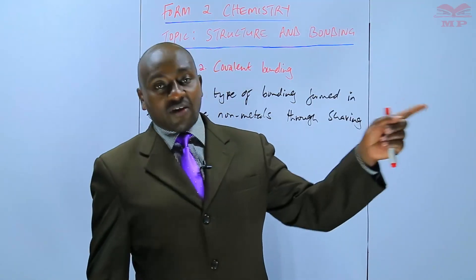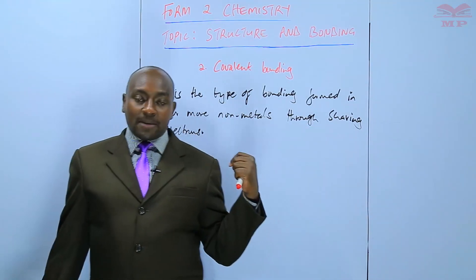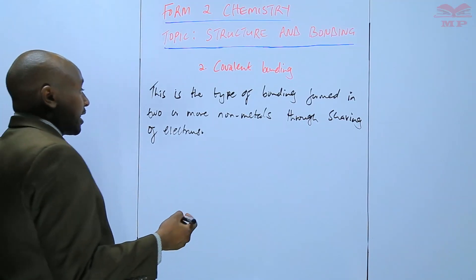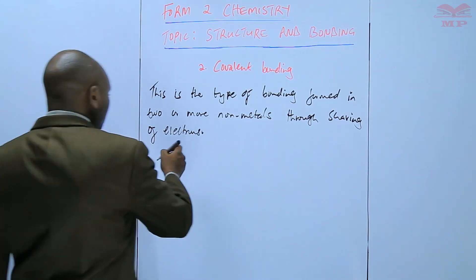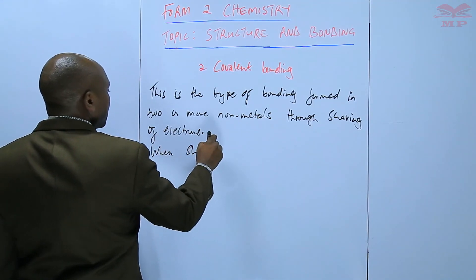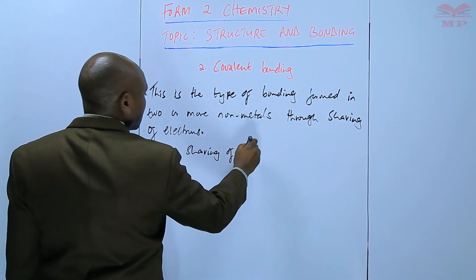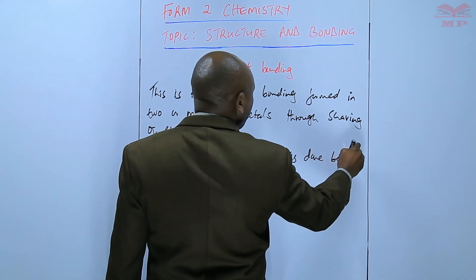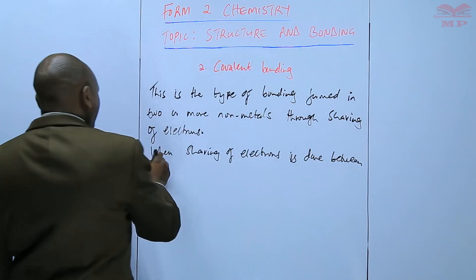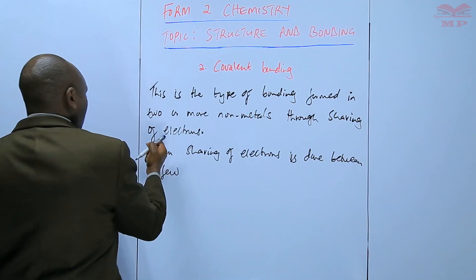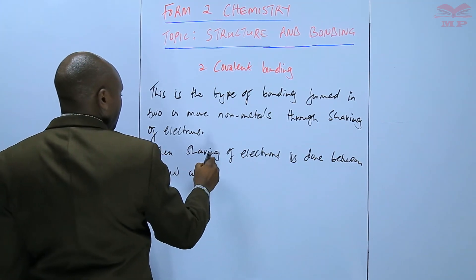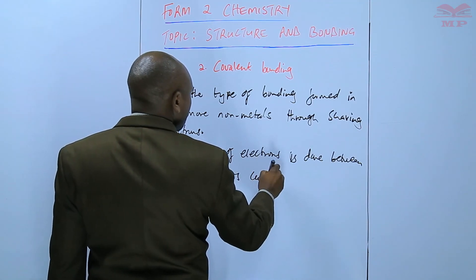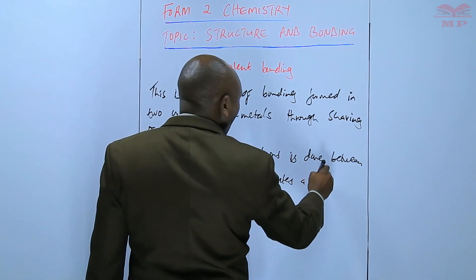So they gain stability by sharing electrons amongst themselves. Here there is no transfer of electrons — there is no loss or gain — but there is sharing of electrons. When sharing of electrons is done between a few atoms, this constitutes a molecule.